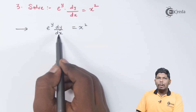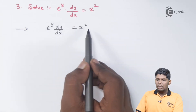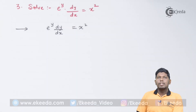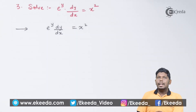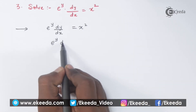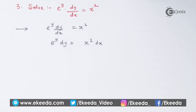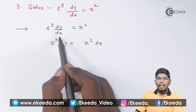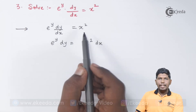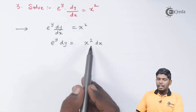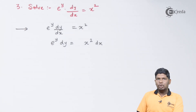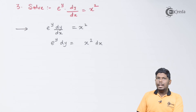We have e raised to y, dy by dx is equal to x square. Let us take dy and dx in the numerator. So taking dx on the right hand side, you can see we have separated the variables. The next step will be integrating on both sides.